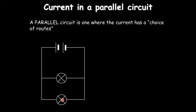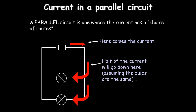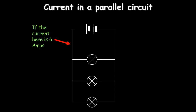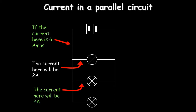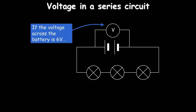In a parallel circuit, bulbs are connected side by side. Current divides — half goes each way, so each bulb receives equal current. With three bulbs and 6 amps total, each bulb gets 2 amps; all currents rejoin to give 6 amps back through the cell. For voltage in a series circuit: a 6-volt battery with three identical bulbs in series gives 2 volts across each bulb; a voltmeter across two bulbs would read 4 volts.